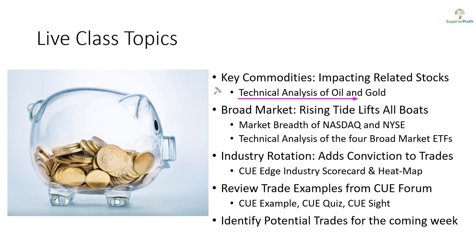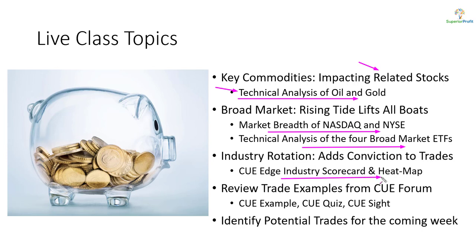In today's topics, we look at the commodities oil and gold and analyze them using technical charts. These commodities tend to impact related stocks. When swing trading stocks, we like to align them in the direction of the market. We will study market direction using market breadth of NASDAQ and NYSE and the technical charts of the four broad market ETFs. We will also study industry strength using industry scorecard and heatmap, and may review recent trade ideas from our traders forum.